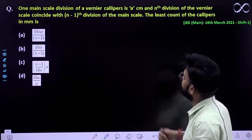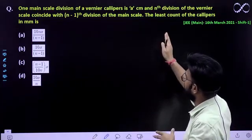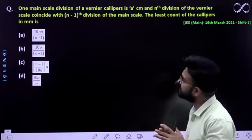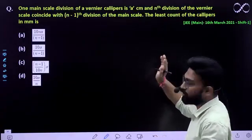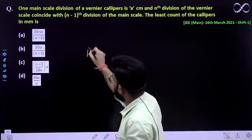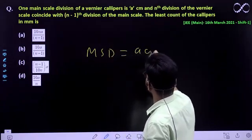One main scale division of a vernier caliper is 'a' centimeter. So the main scale division, MSD, is given as 'a' centimeter.